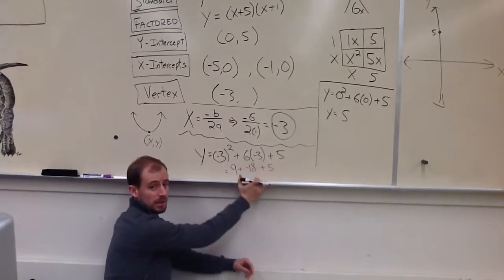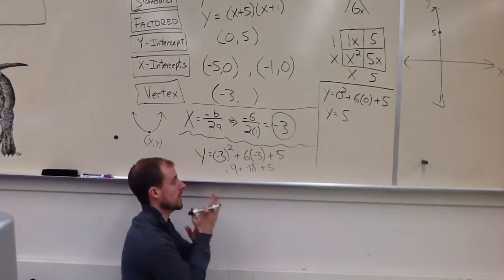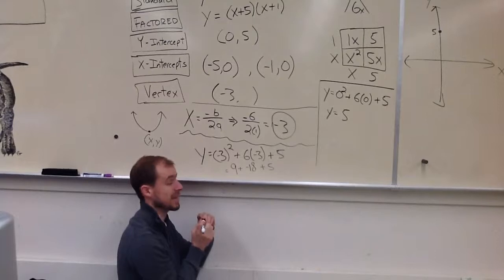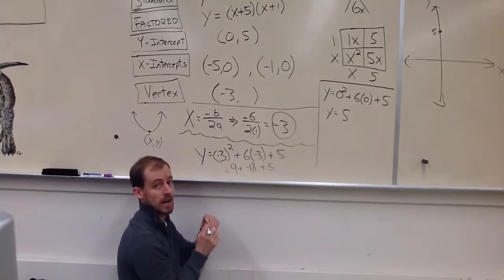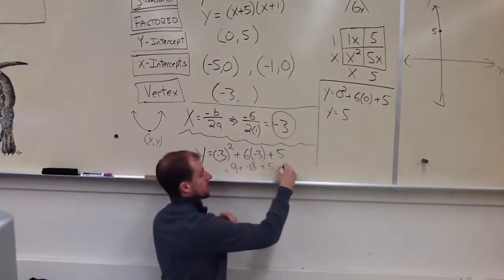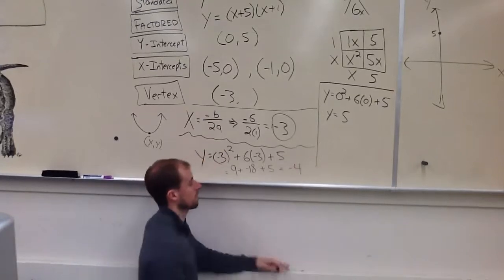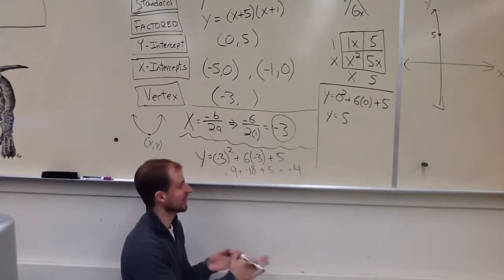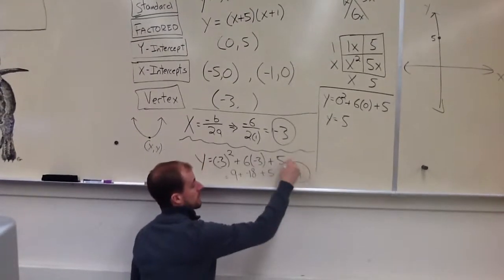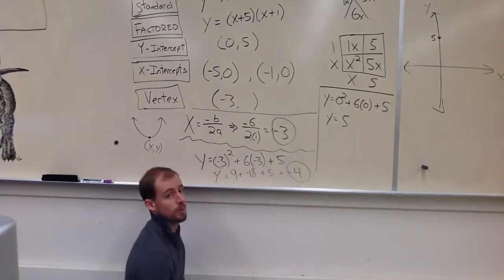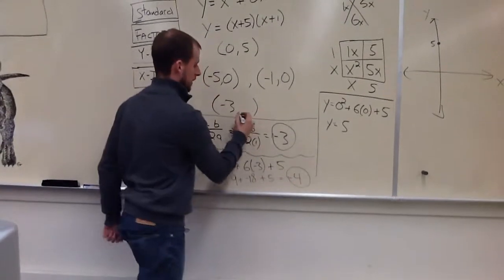Negative 3 squared. It's going to be negative 3 times negative 3. So, that's going to be positive 9 plus 6 times negative 3 is negative 18 plus 5. So, right here, I can plug all this in the calculator or I can just do this in my head. So, 9 plus negative 18. So, that's going to be negative 9 plus 5. It's going to be negative 4. Unless I made a series here. So, that's the y for my vertex. I go back up and I plug that back in.